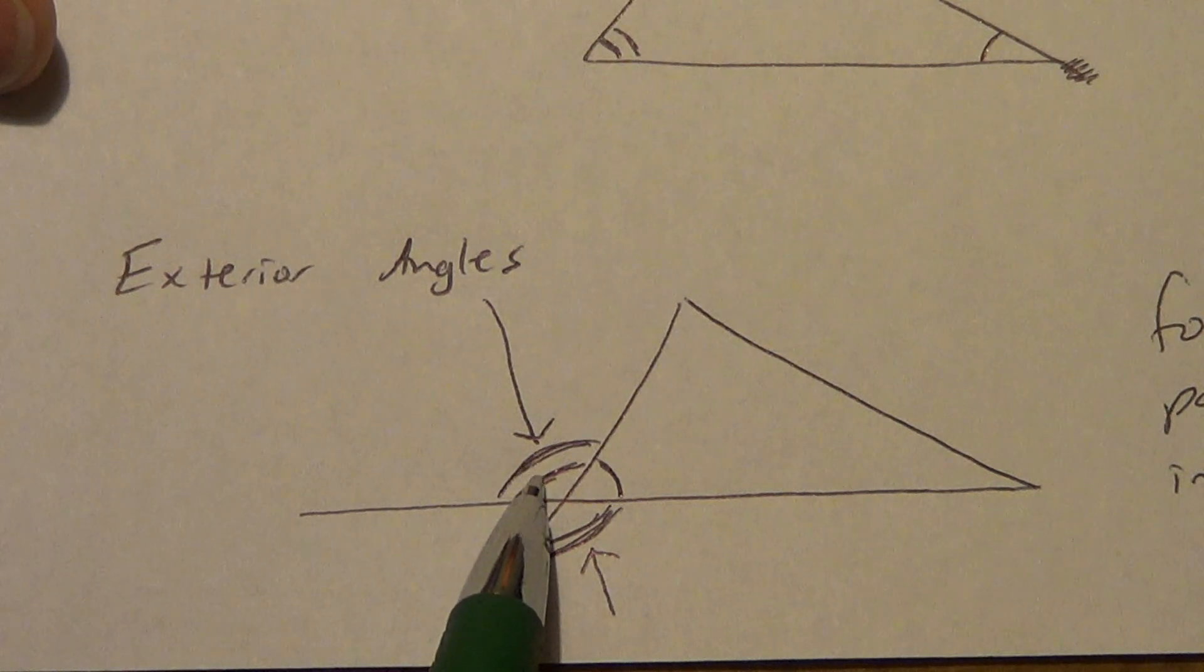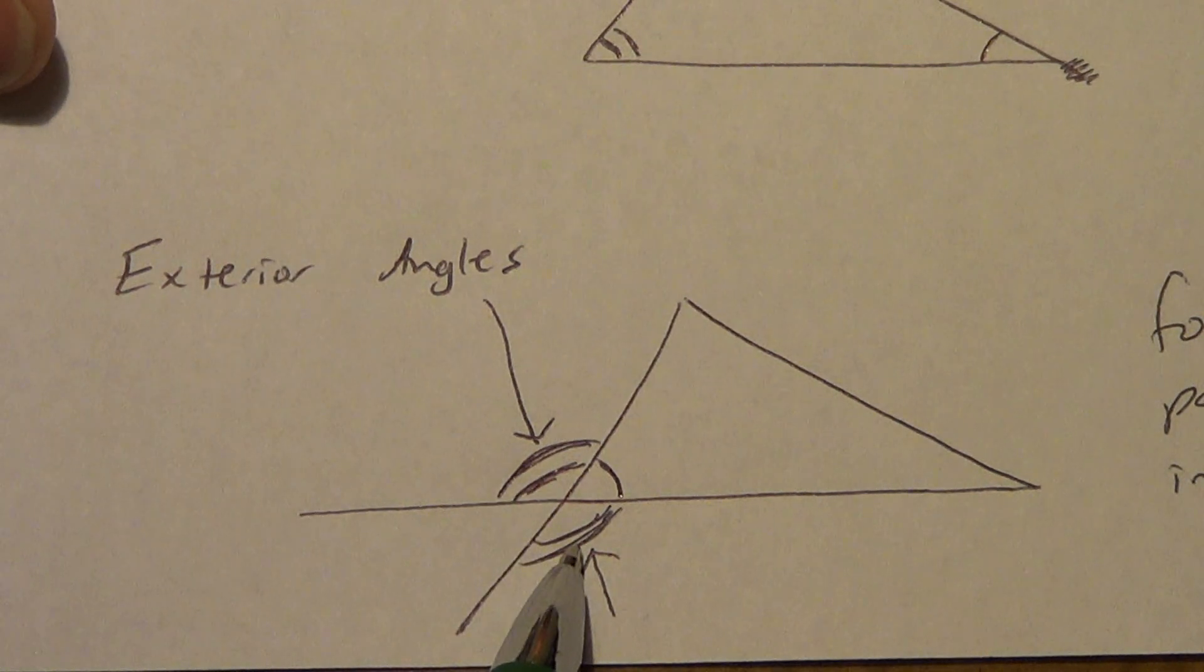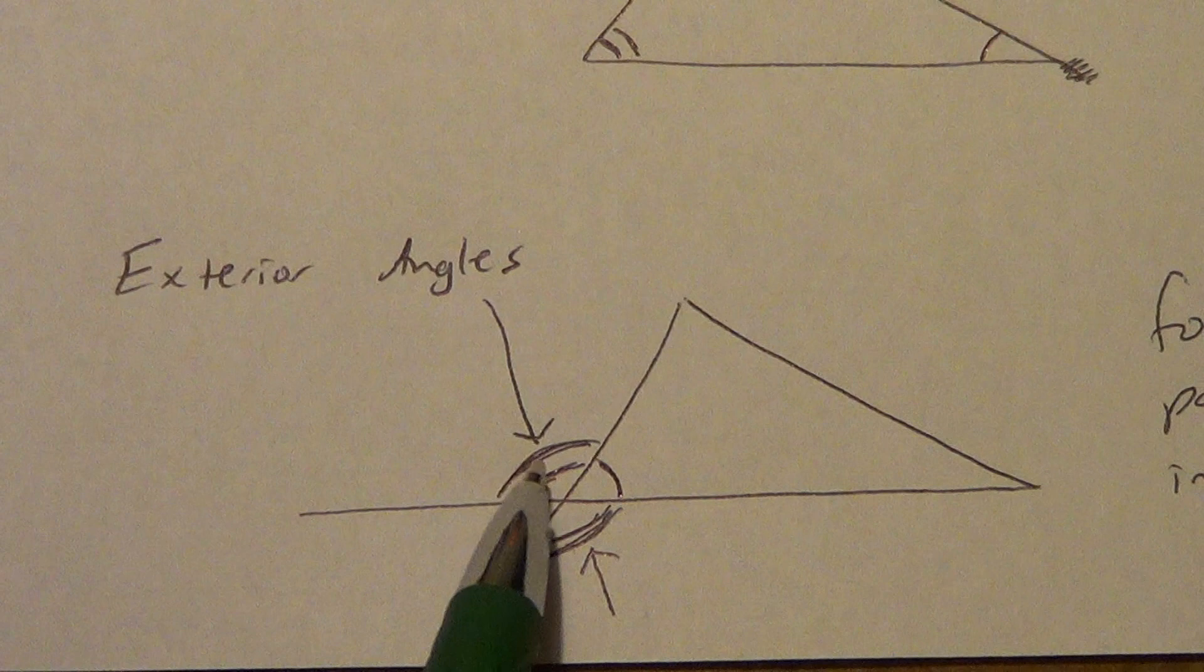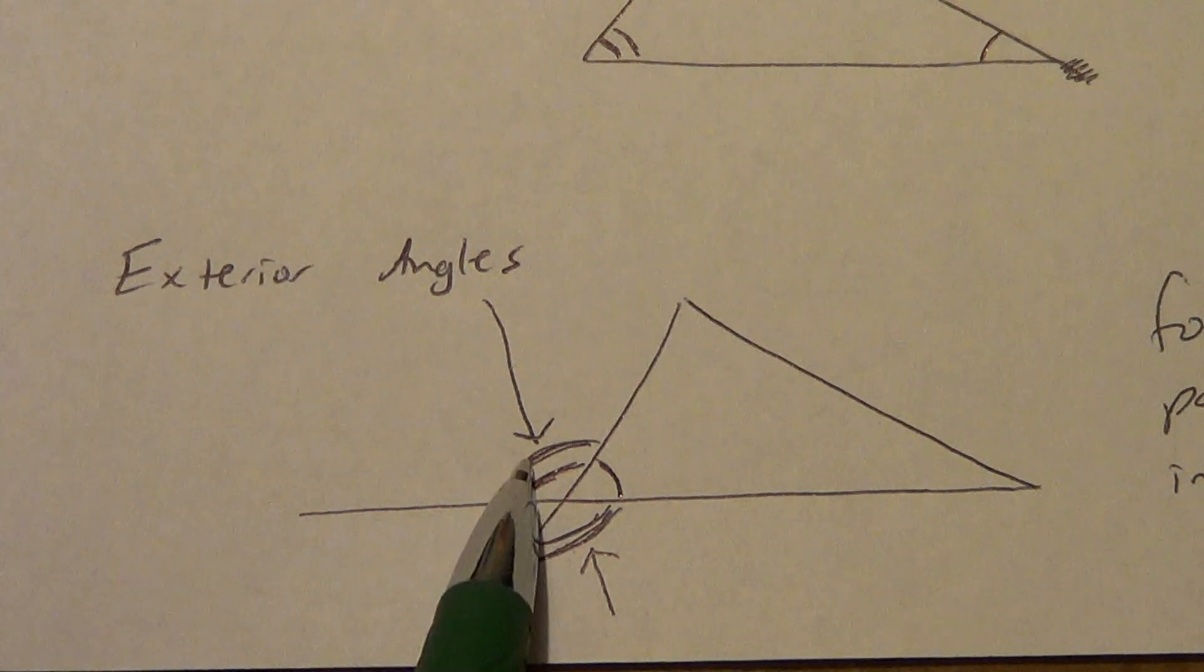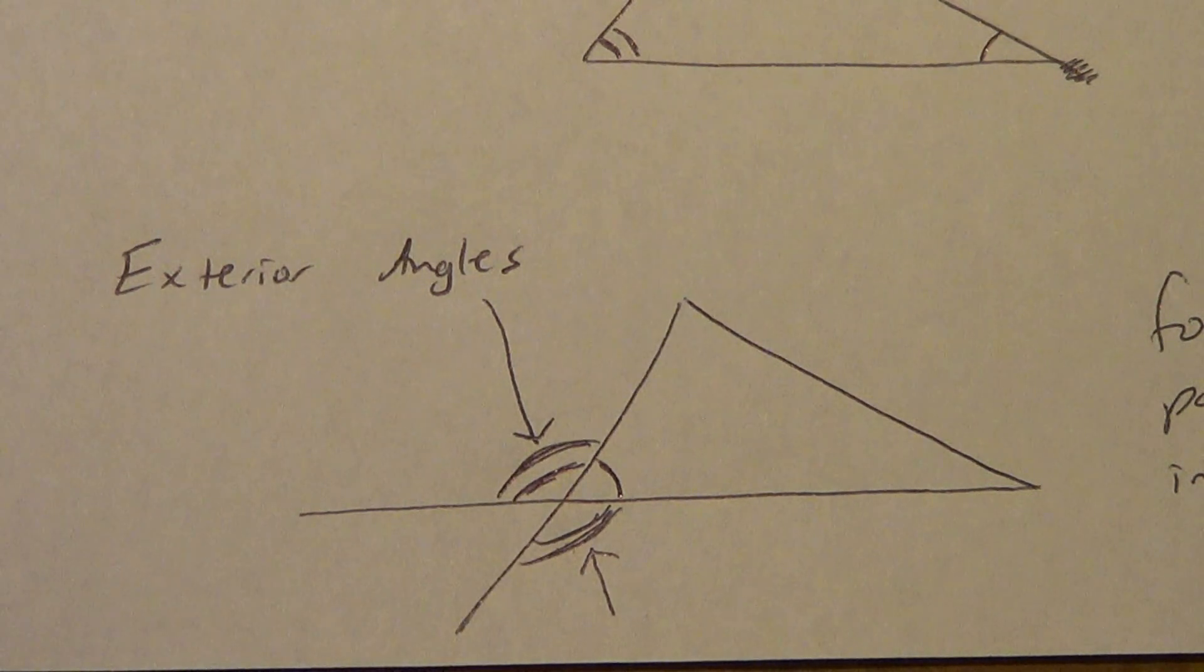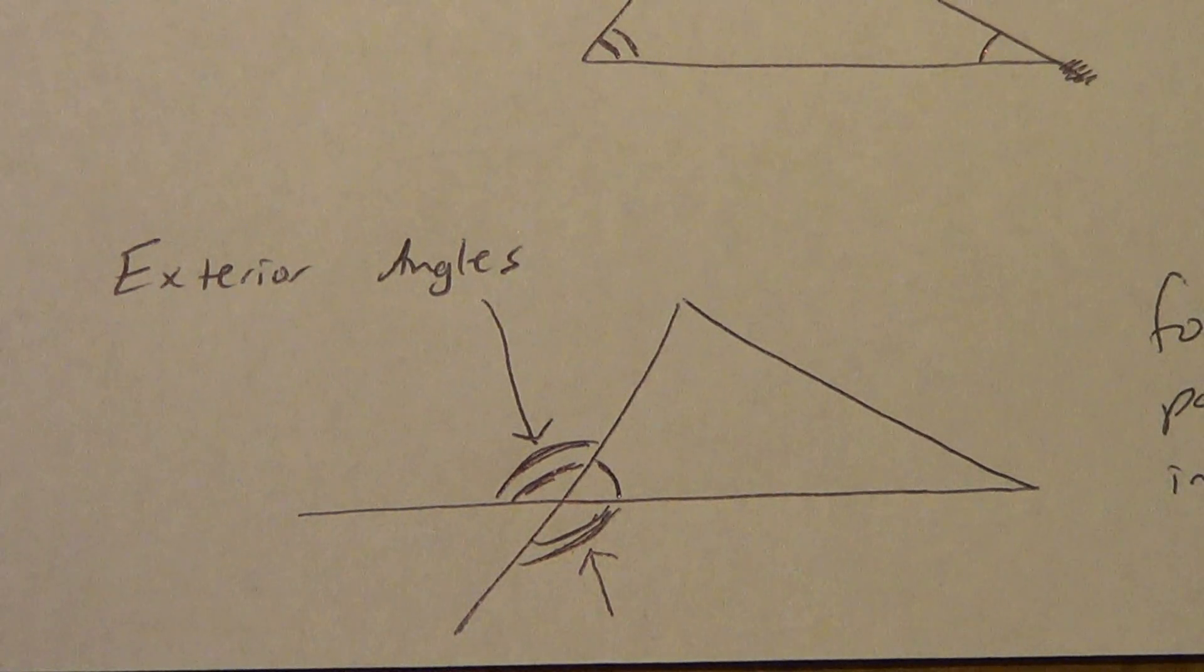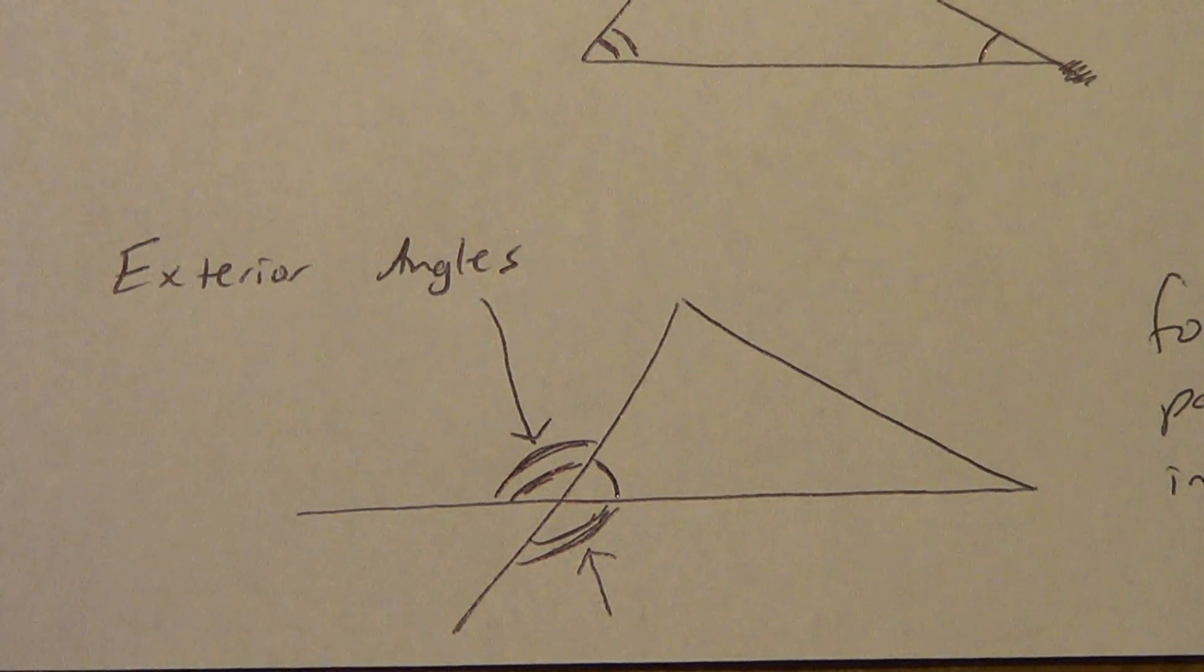So, exterior angle, it can be this one, or it can be this one. Now, the thing is we only pick one at each corner. So, if you pick that one, don't pick this one. If you pick this one, just don't pick that one. Don't pick both exterior angles at the same corner at the same time. Alright. Just pick one of them. It does not matter which one you pick because they're going to have the same measure anyways. Alright.